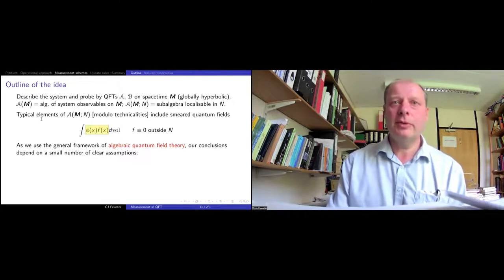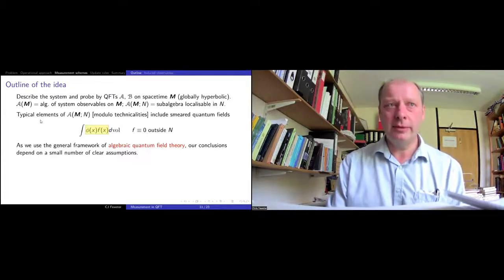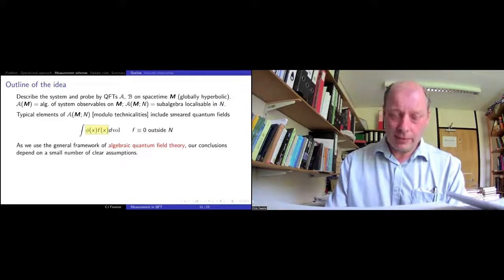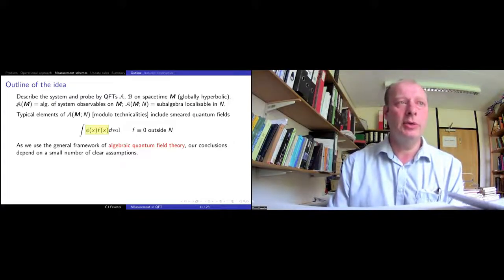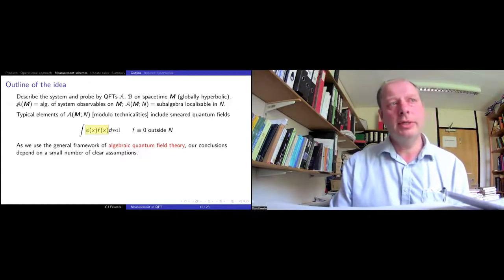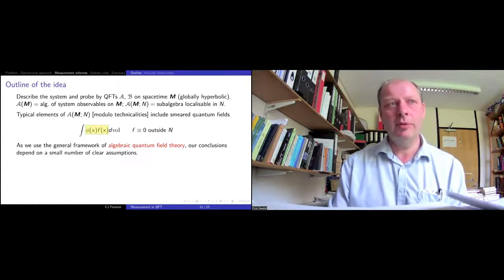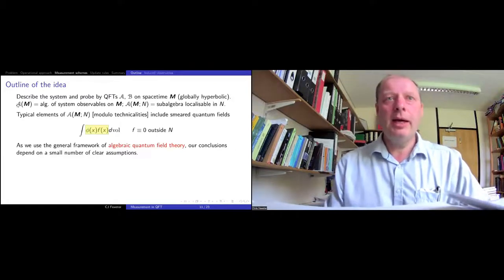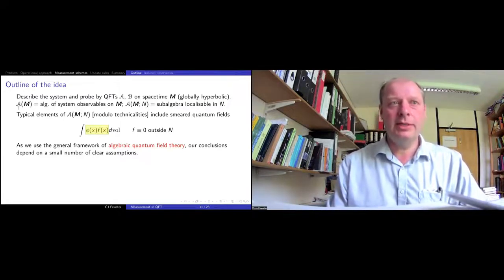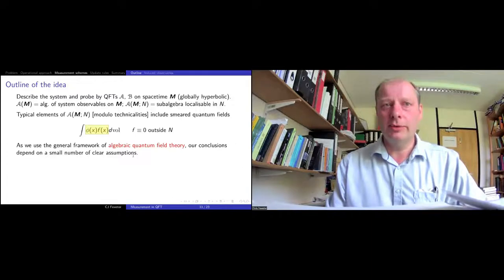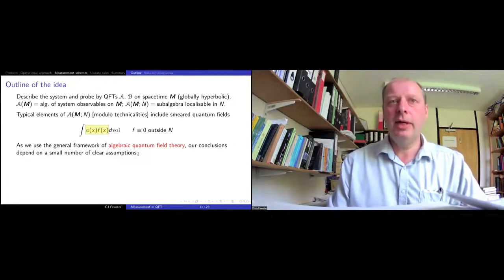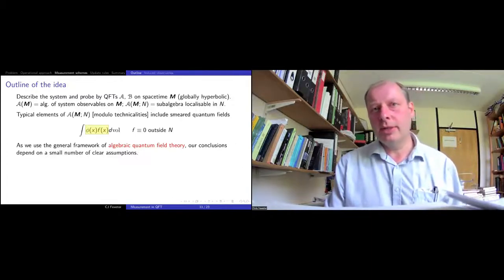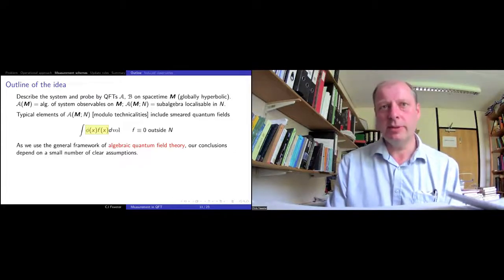Very much as in Bob Wall's talk yesterday, I'm going to use the algebraic approach to quantum field theory. Theory A on space-time M is described using an algebra of observables. If I look at a little region N within my space-time, I can ask about the elements of this algebra that are localizable in that region N — denoted A(M; N). A typical element of this local algebra would include something like a smeared field integrated against a test function which vanishes outside region N.